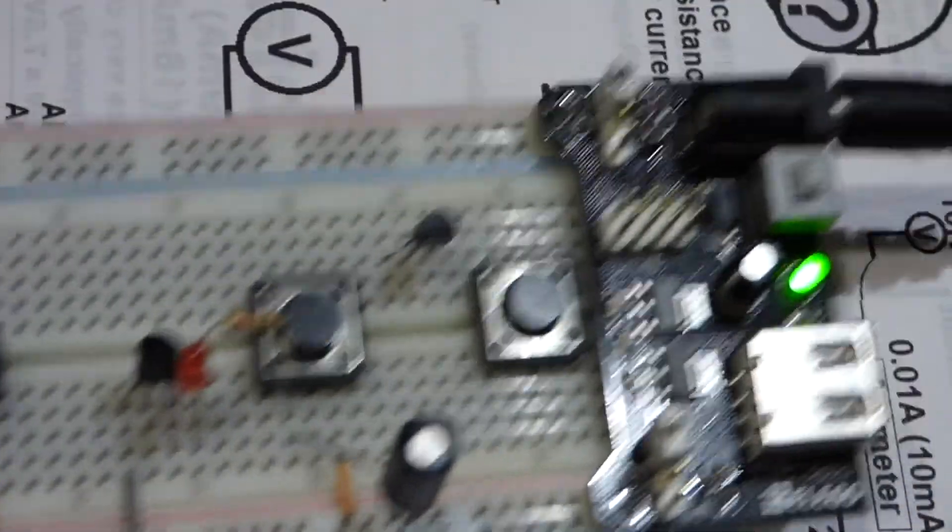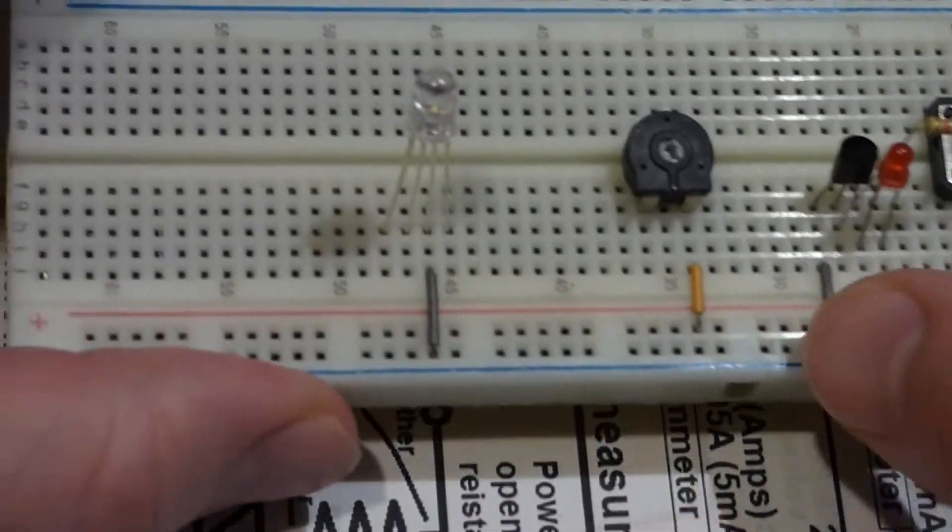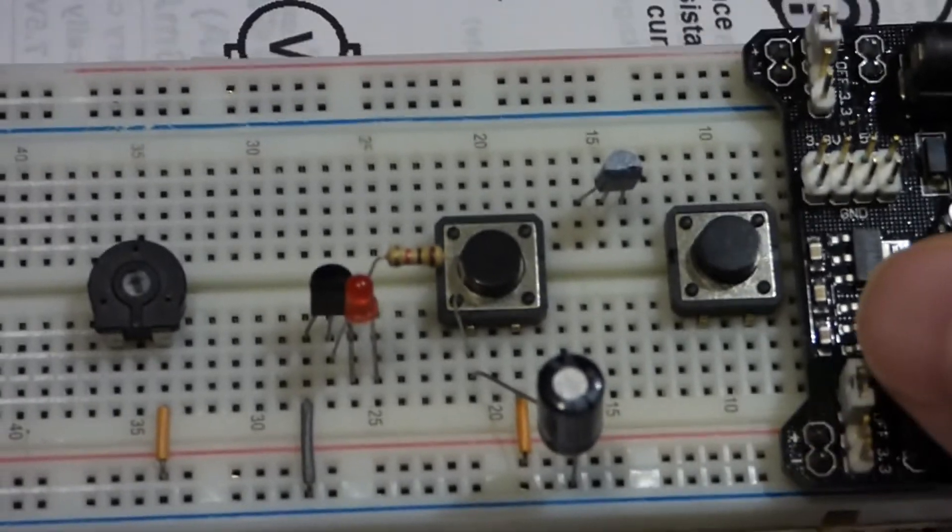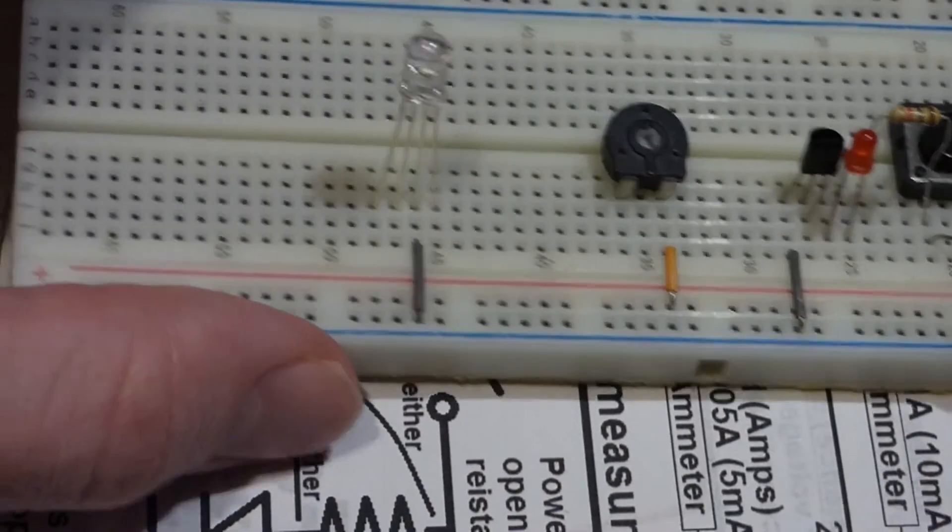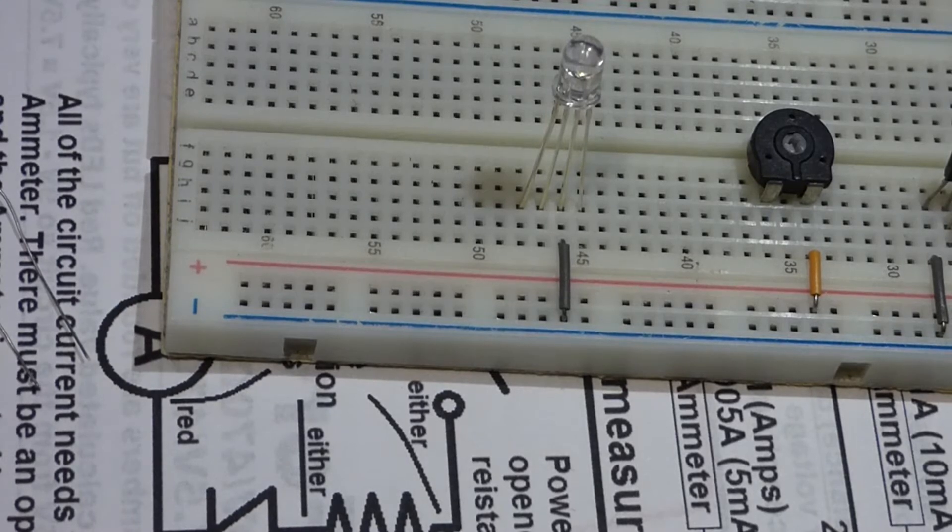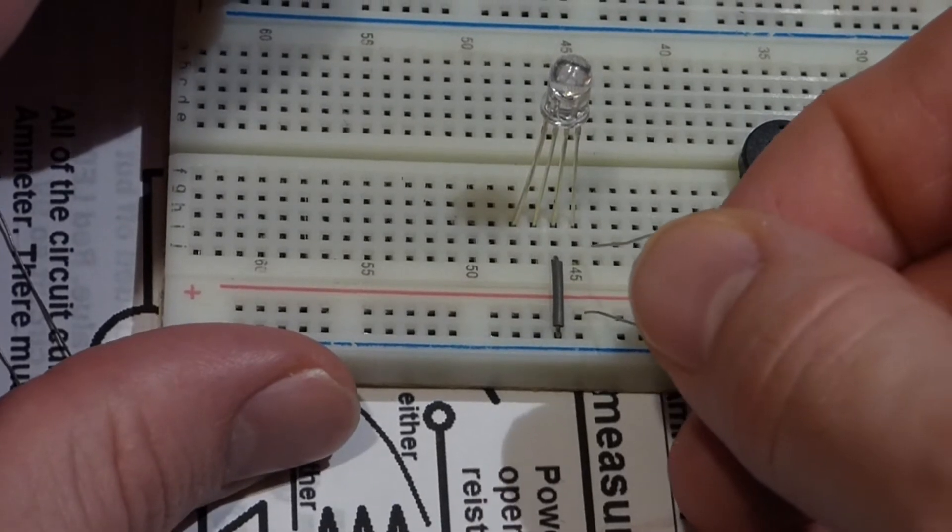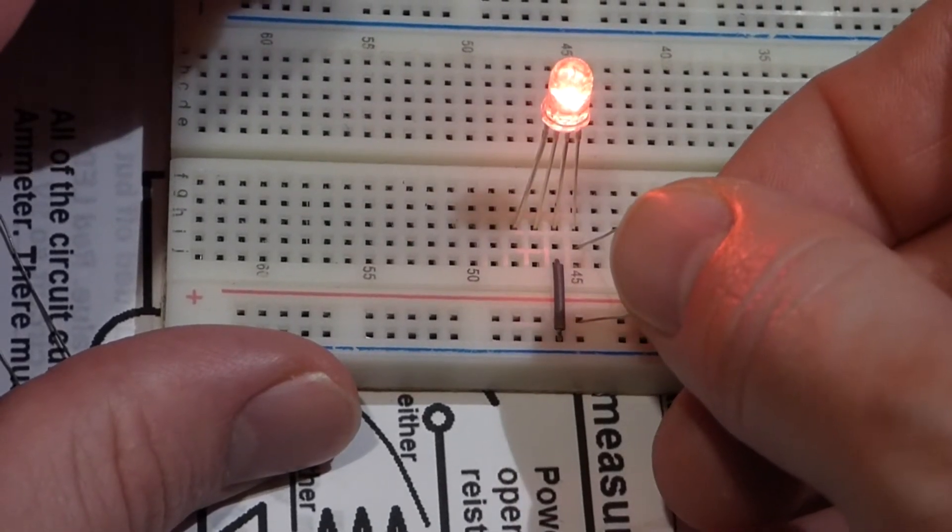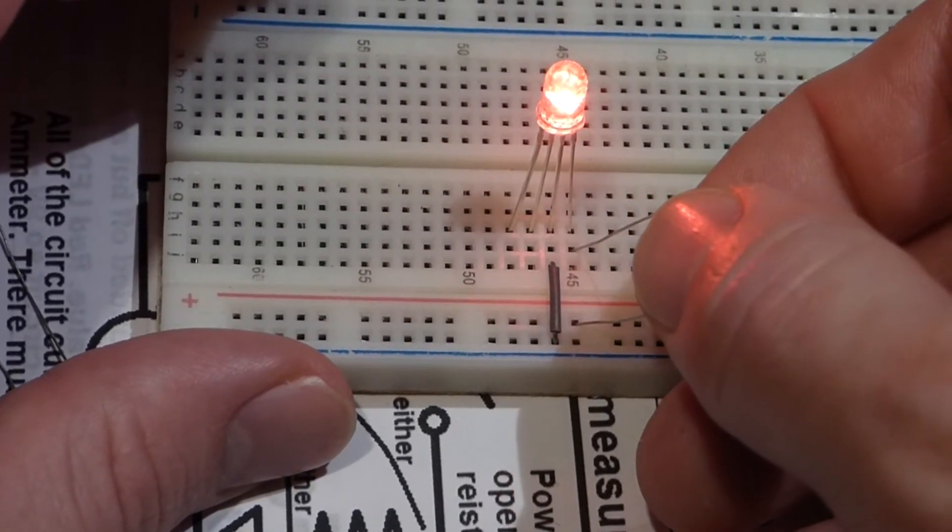Now I turn the power supply on. We have 5 volts at the rail. Power supply is set for 5 volts. All these other components are from another video, I haven't put them away yet. I'm going to take one of the 220 ohm resistors that was provided by the kit. Attached there. You can see we got red.